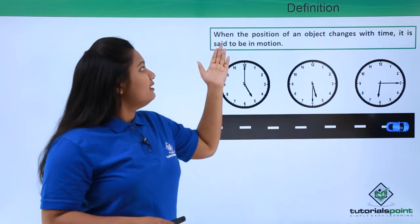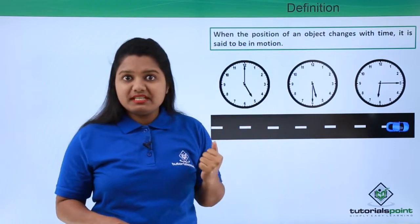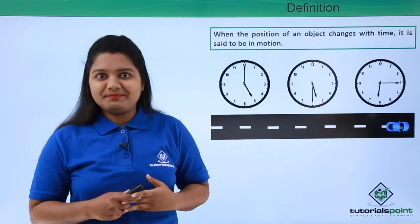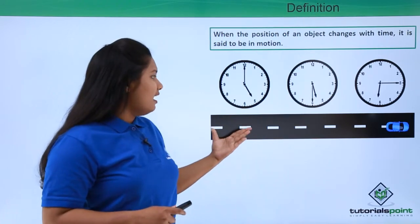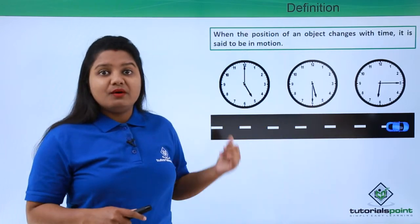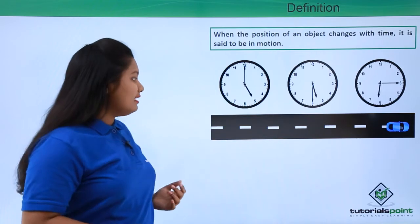So from here we can conclude that when the position of an object changes with time, we say that that object is in motion. Now here the car has moved along a straight path. Any motion along a straight path is said to be motion in a straight line.